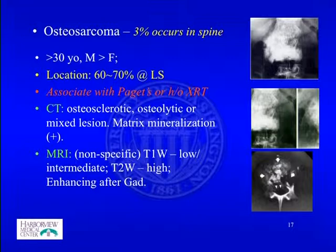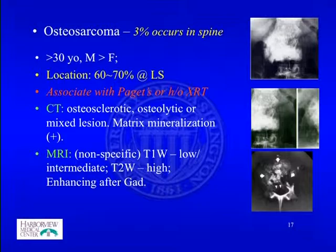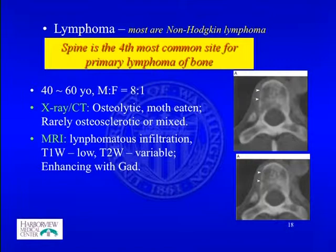Osteosarcoma has only about a 3% chance of occurring in the spine, normally after age 30 with male predominance, and the lumbar sacrum accounts for 60 to 70% of cases. CT shows osteosclerotic, osteolytic, or mixed lesions with matrix mineralization. MRI is not specific. Osteosarcoma is sometimes associated with Paget's disease or a history of radiation.